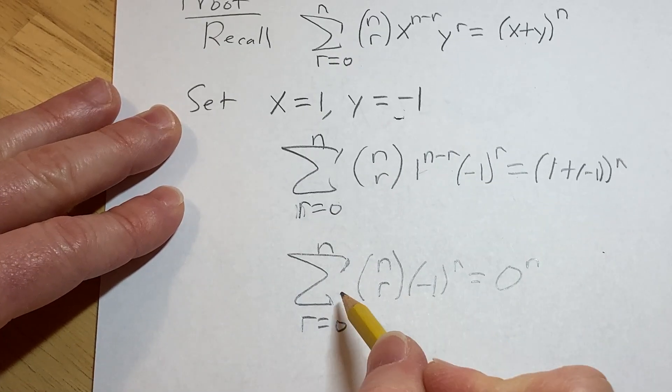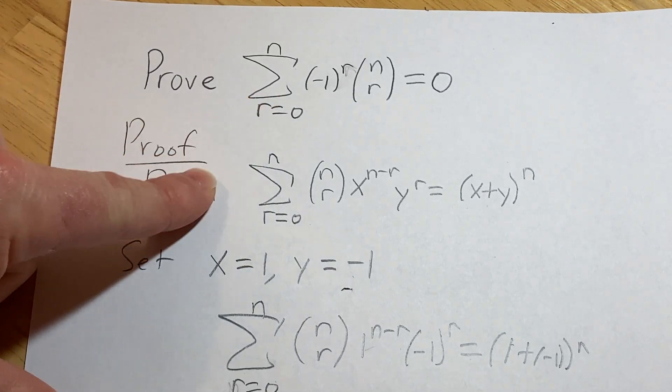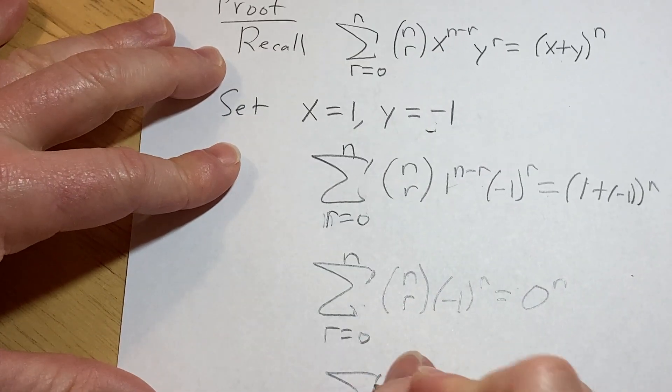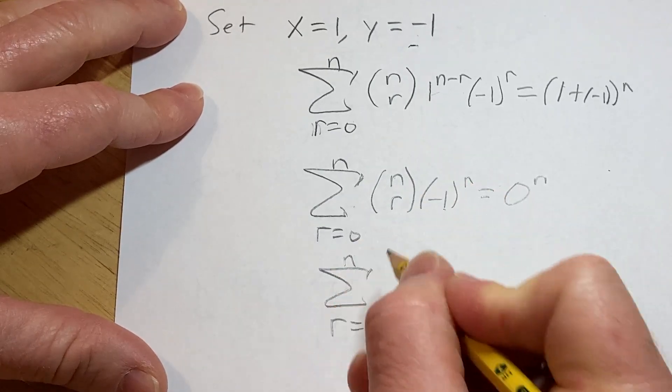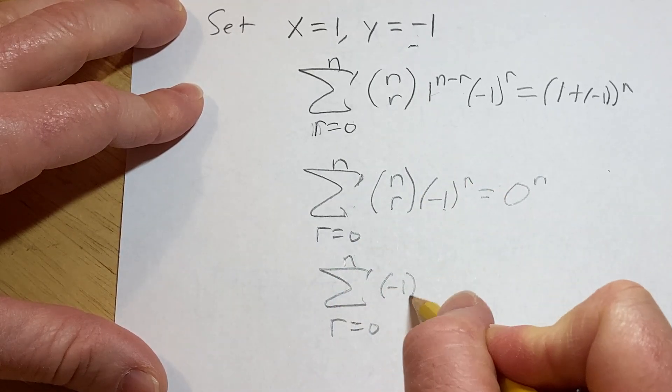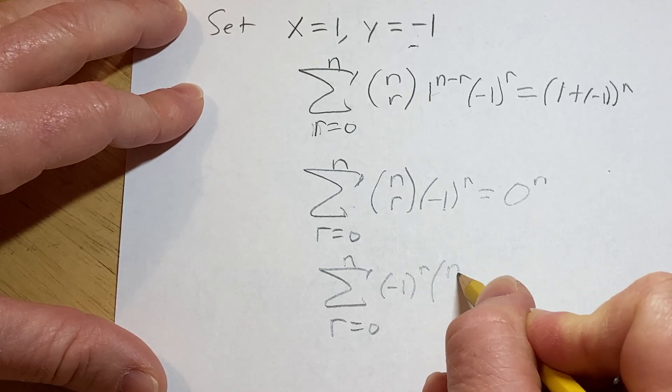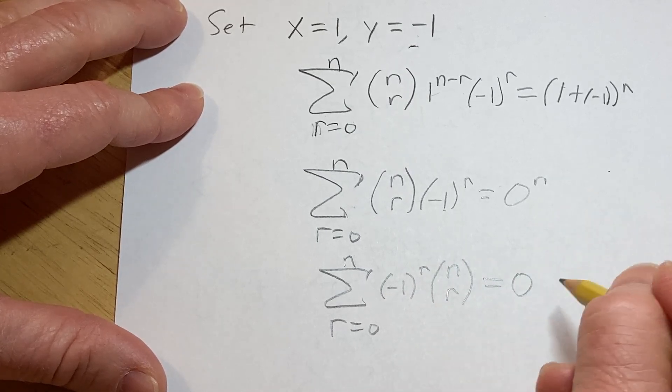I'm going to go ahead and write this in the front, because that's what the proof wanted, so I'm just going to put it there. Multiplication is commutative, so no issues. R goes from 0 to n, then we have negative 1 to the r, n choose r, and 0 to the n is 0.